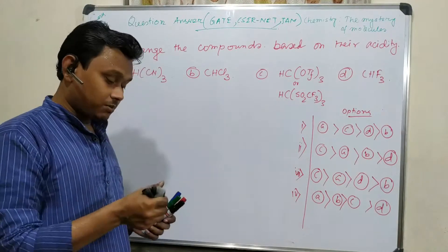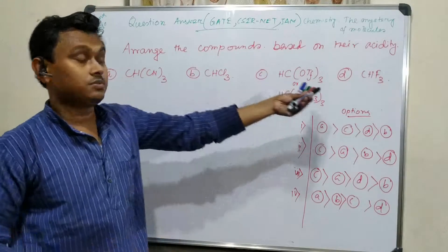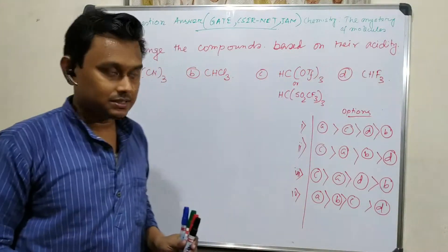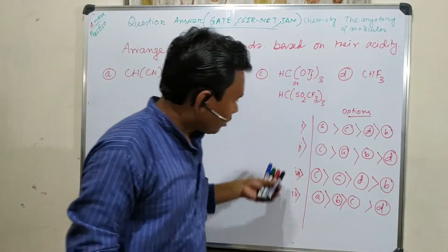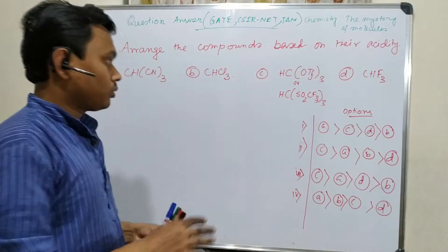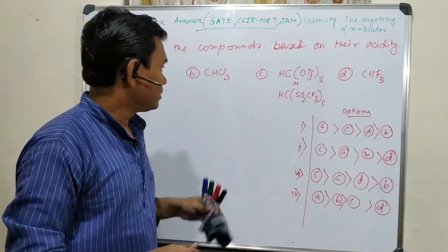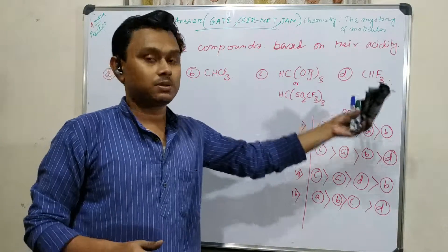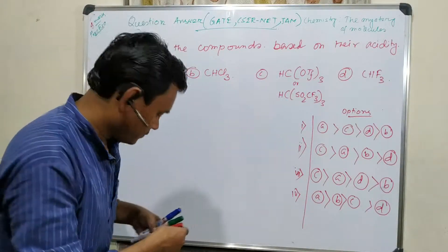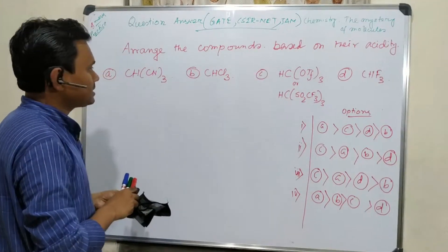Such type of question may come because of the options and individual properties. The question is: arrange the compounds based on their acidity. Four options are given, and you have to find the correct order. I will explain the tricks at the end, but first I need to explain logically why each compound is acidic.